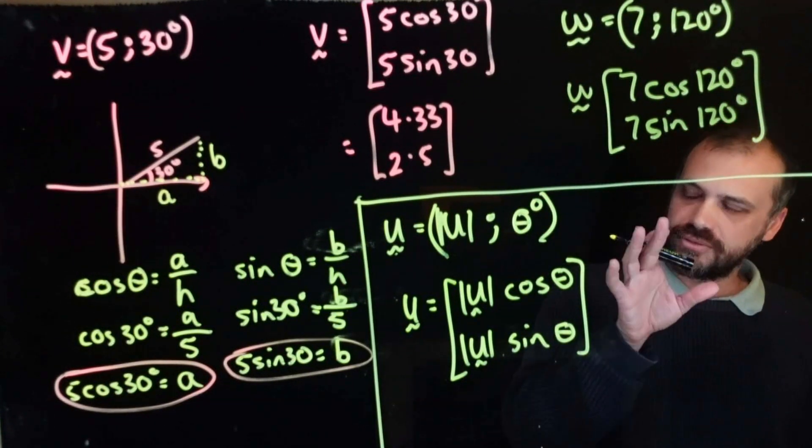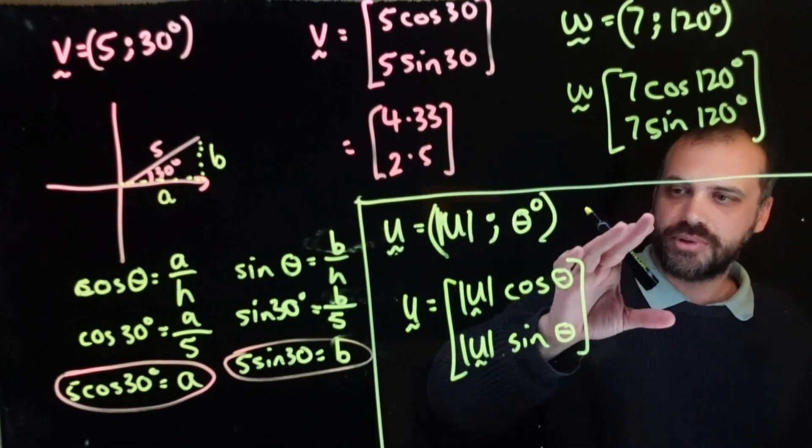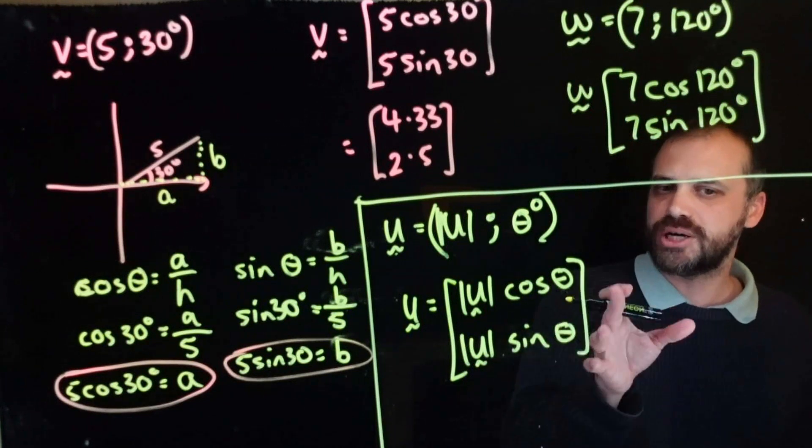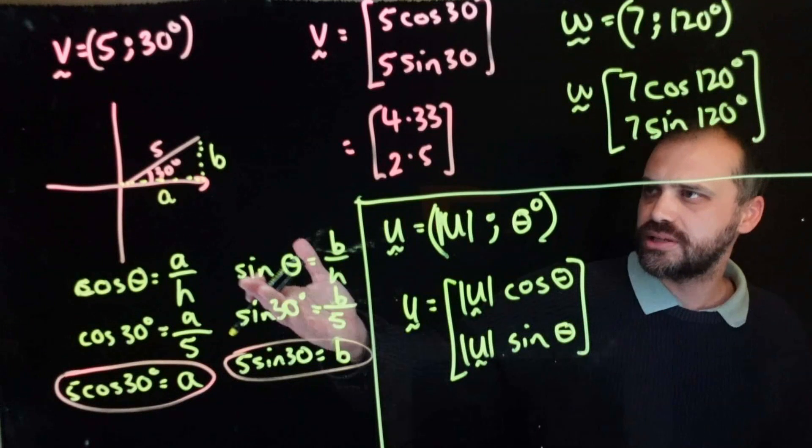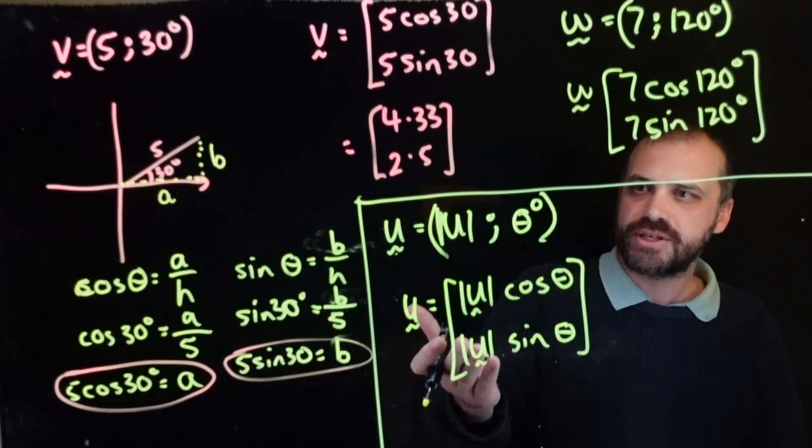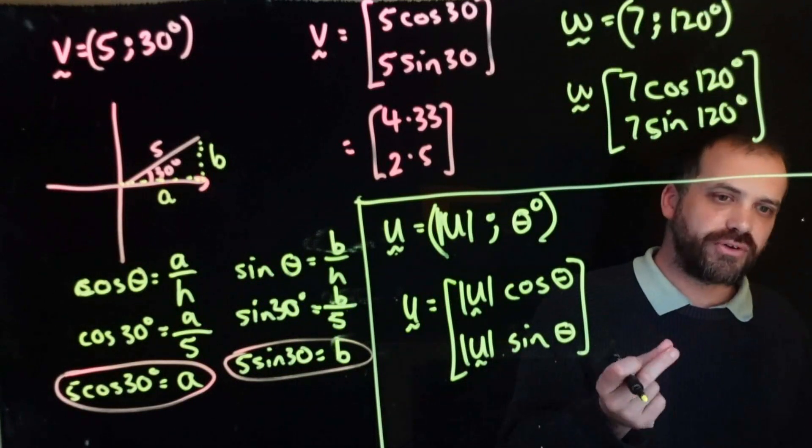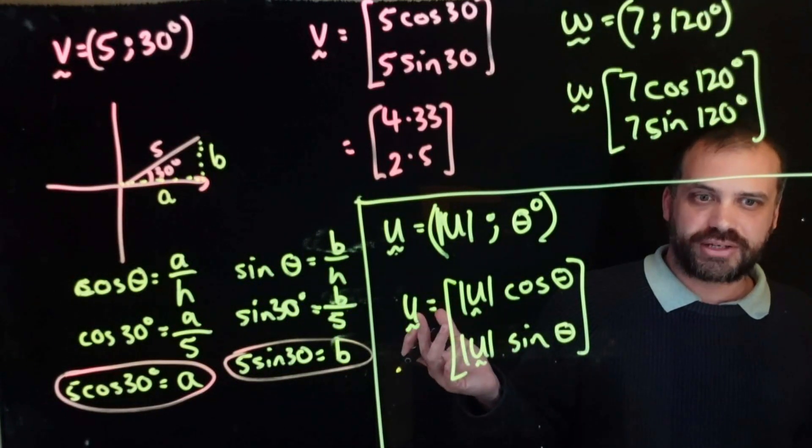As you can see, converting from polar form to component form, given this nice neat little formula, is much easier than working the other way, I think. But it is important to understand that it works. This is the reason it works. It's just trigonometry. It's just we have a neat little way of making it happen really fast. Practice, practice.